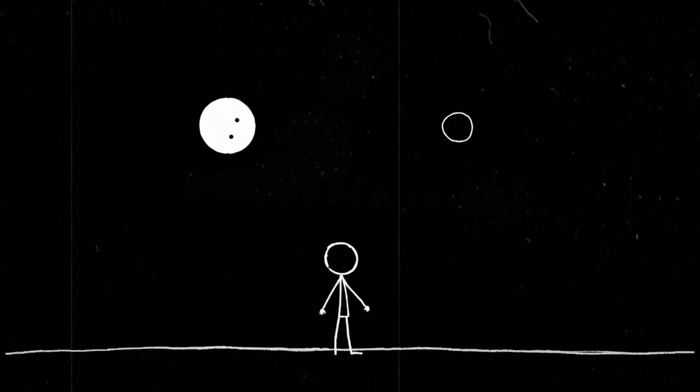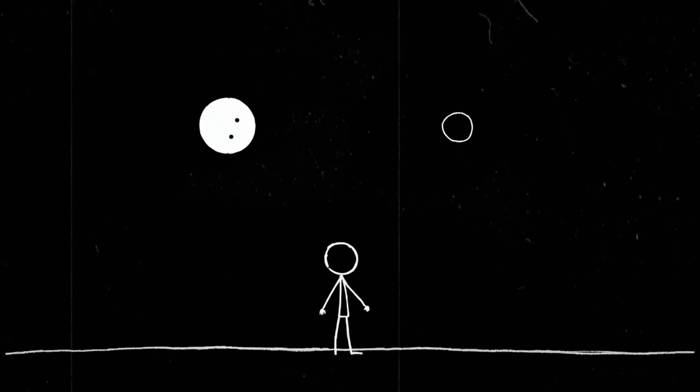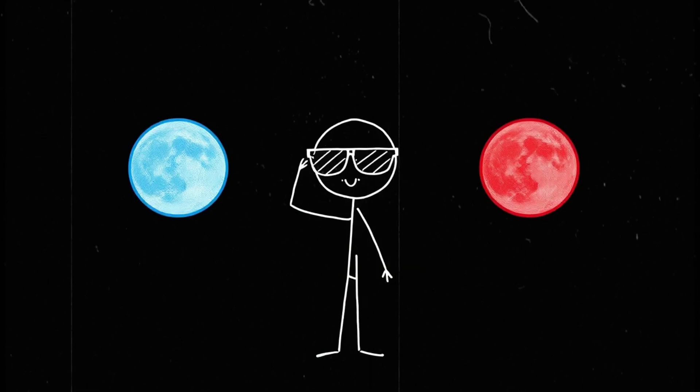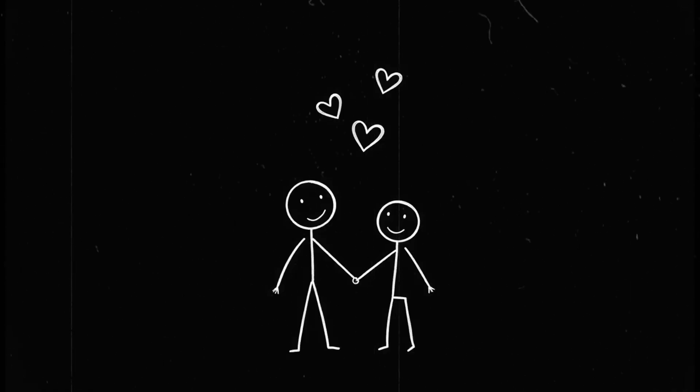But even a smaller moon would give us wild lunar eclipses, double shadows, and even a rare event called a mutual occultation, where one moon eclipses the other. Imagine looking up and seeing one moon slowly passing in front of the other, like a cosmic magic trick. And depending on its surface, this second moon could reflect light differently. Maybe a bluish tint, or a deep red glow.